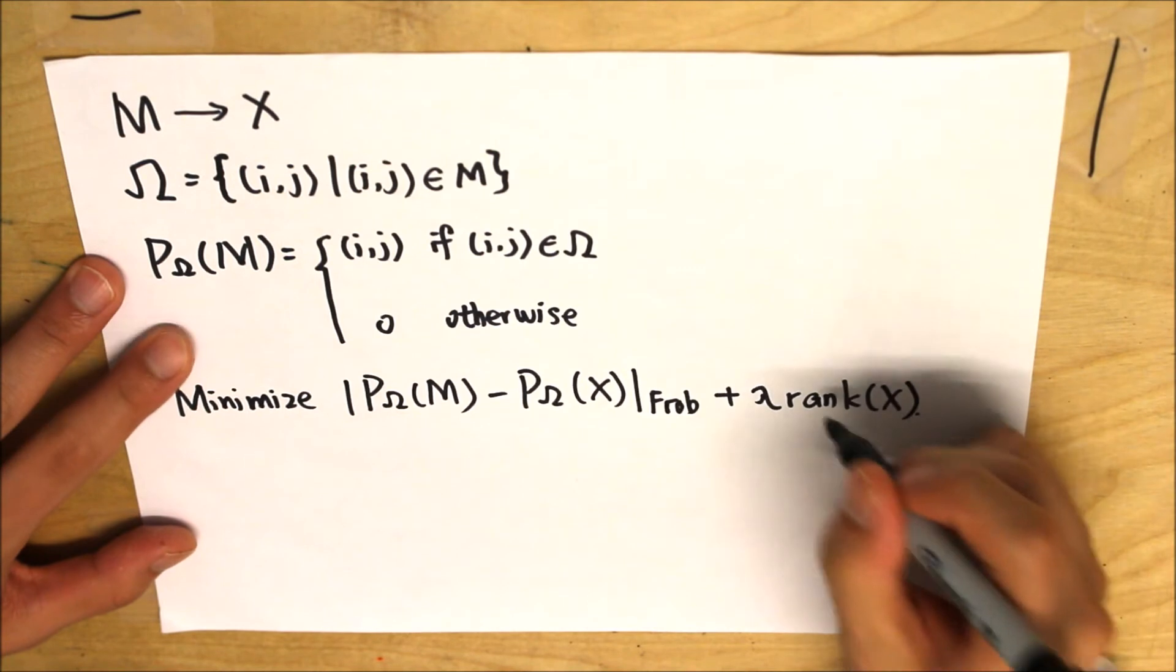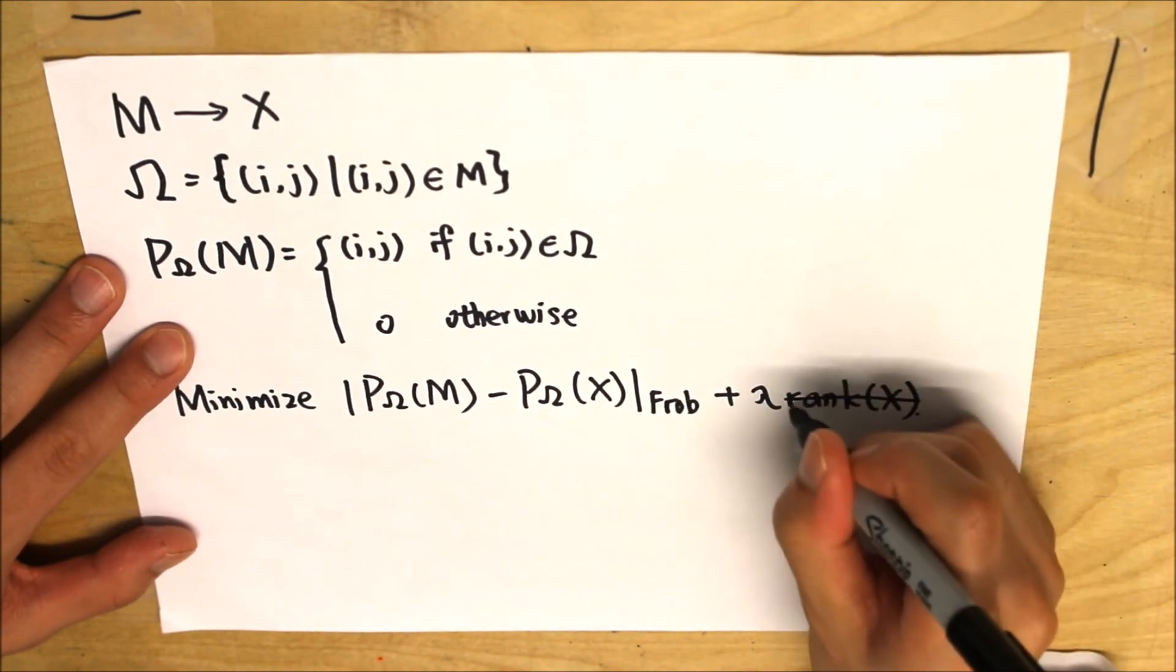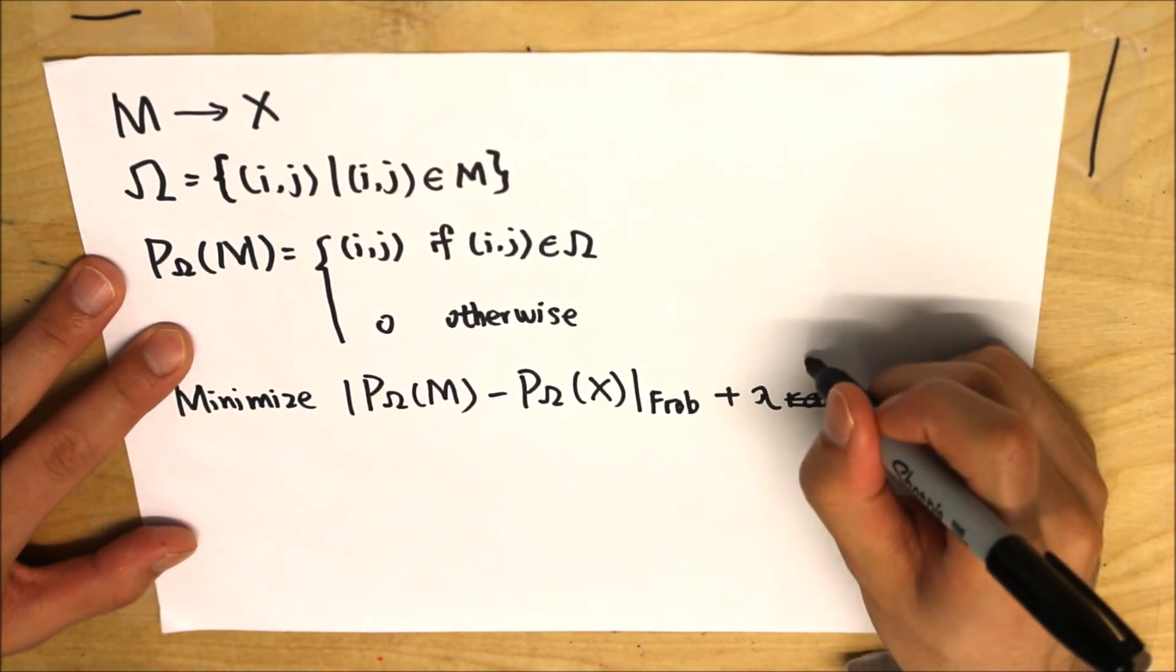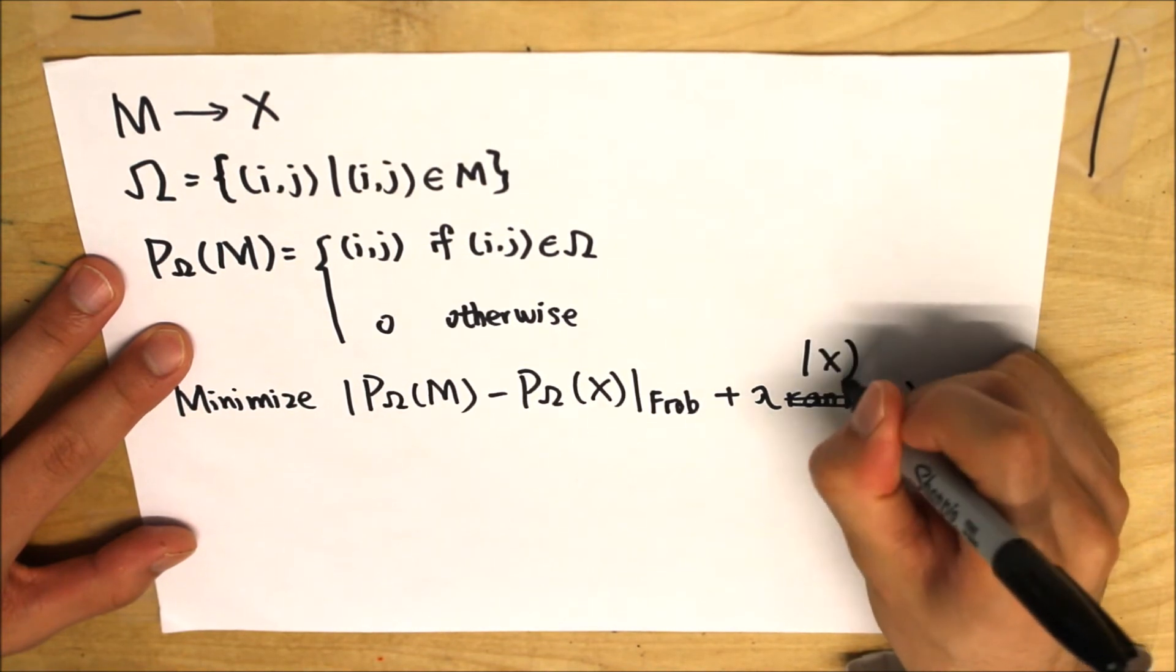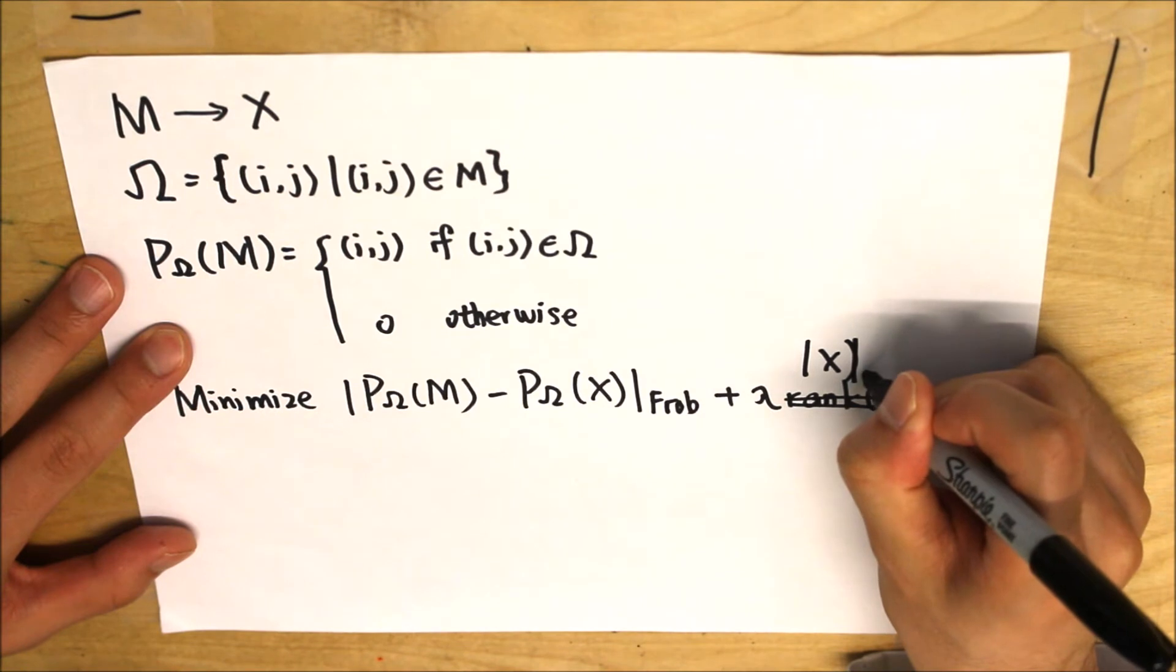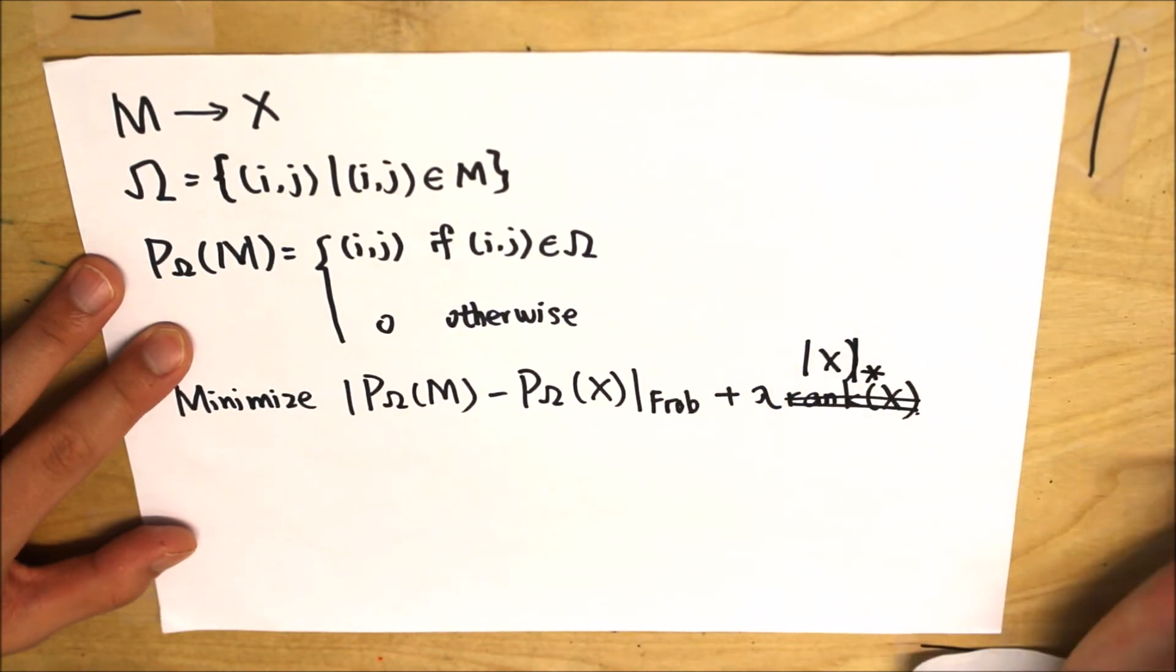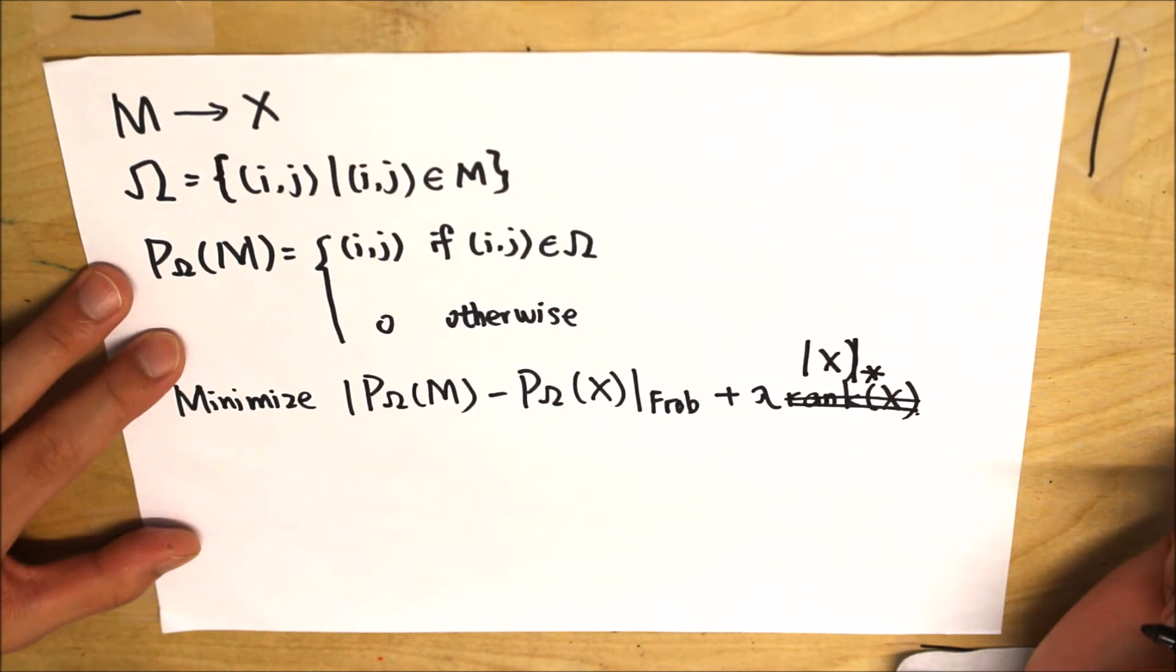Since the minimization of matrix rank is a provably NP-hard problem, we will not be able to solve that. But we found the singular values of a matrix can be a very good representation of the rank of a matrix, so we replaced the rank of a matrix with its nuclear norm. And here, we have our final equation for optimizing the matrix completion problem.